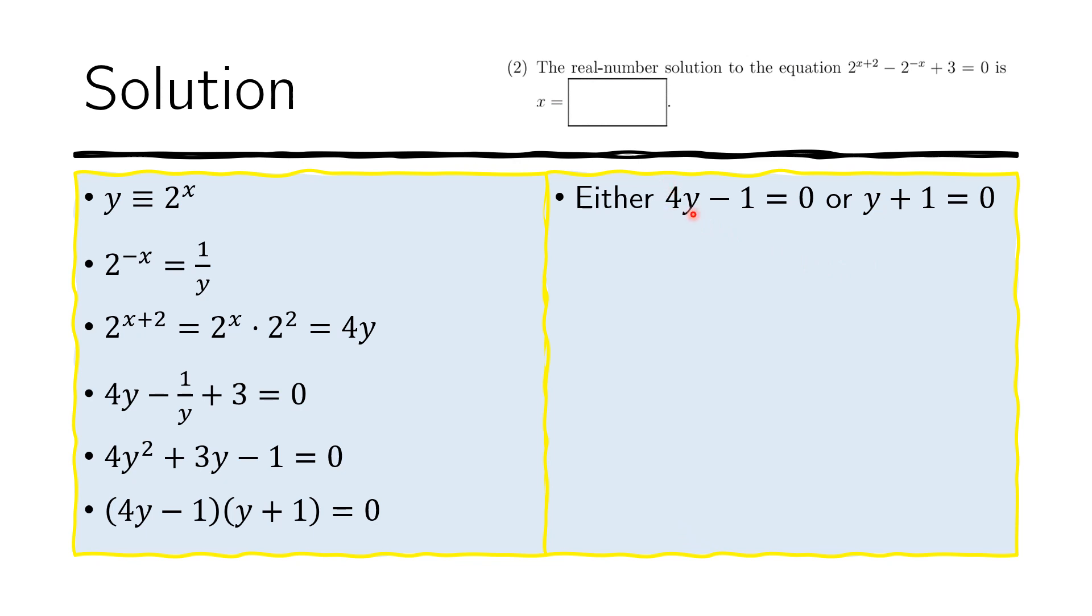Let's look at the first condition. If 4y - 1 = 0, then solving that gives y = 1/4.